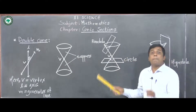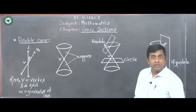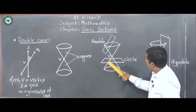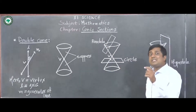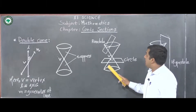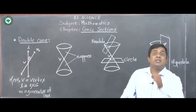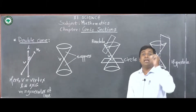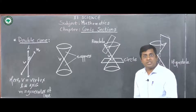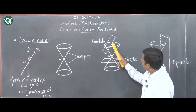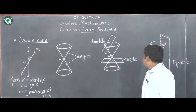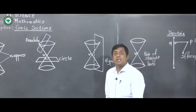Next, if the plane is parallel to one of the generators of the cone and does not contain the vertex, then this type of section gives a parabola. We get this open curve which is the parabola.